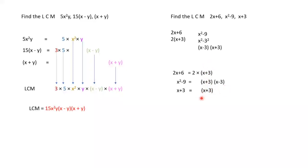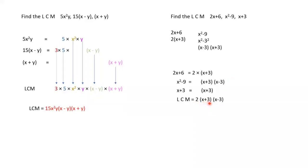Now choose the highest power of each factor. From the number part, highest power is 2. For (x + 3), highest power is (x + 3) — if it were squared you'd take the square, but here it appears once. For (x − 3), it only appears once. Therefore the LCM is 2(x + 3)(x − 3). You can now go with your exercises — thank you very much.